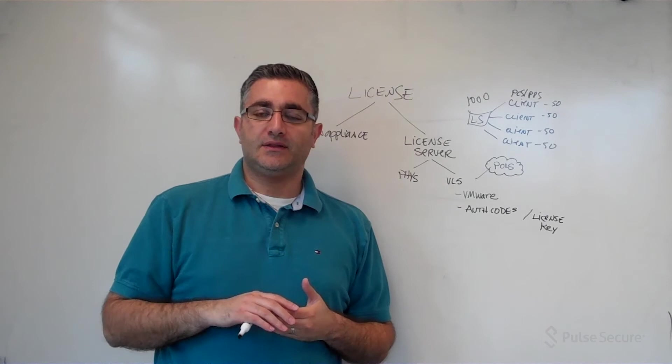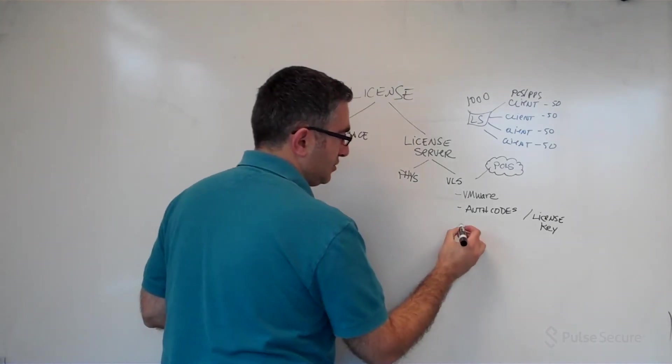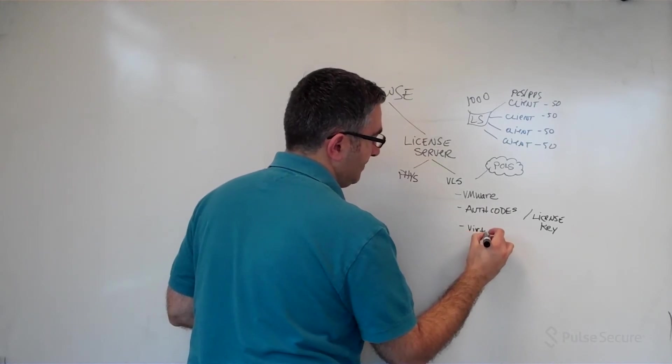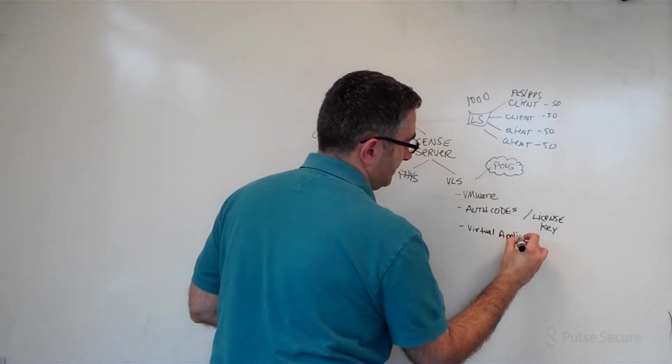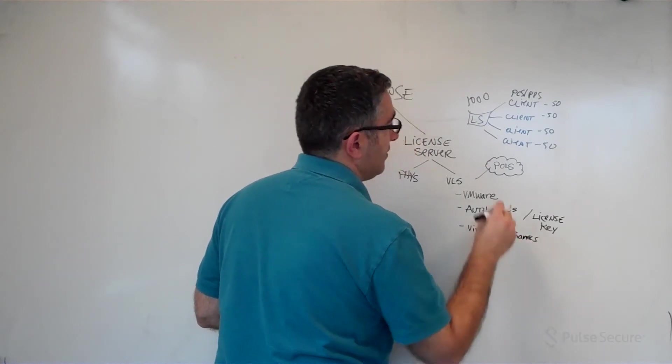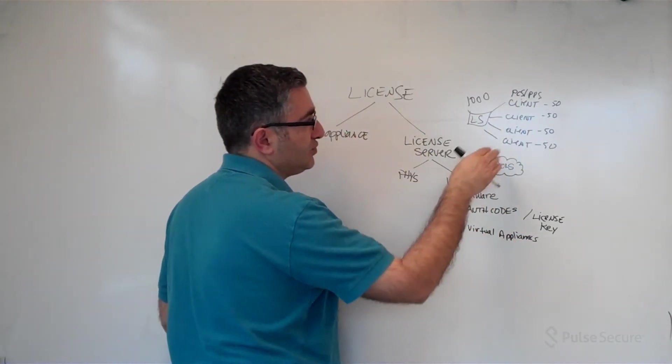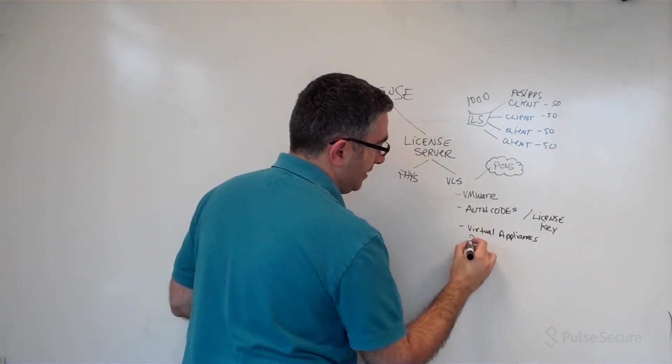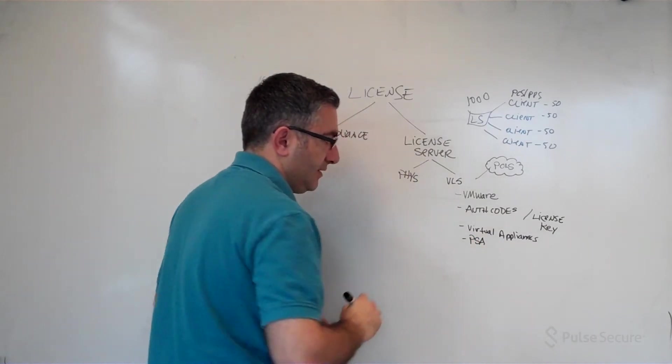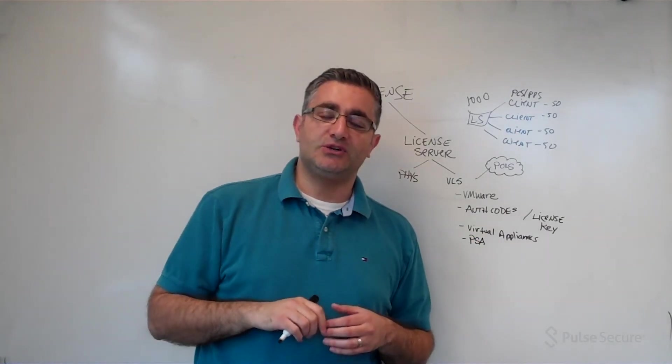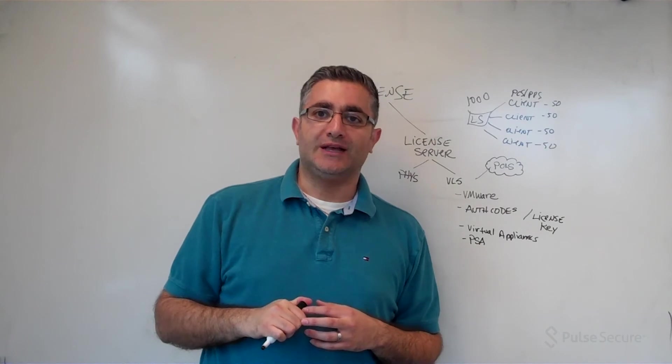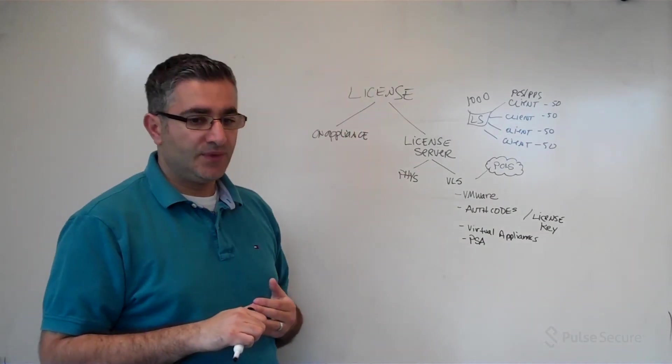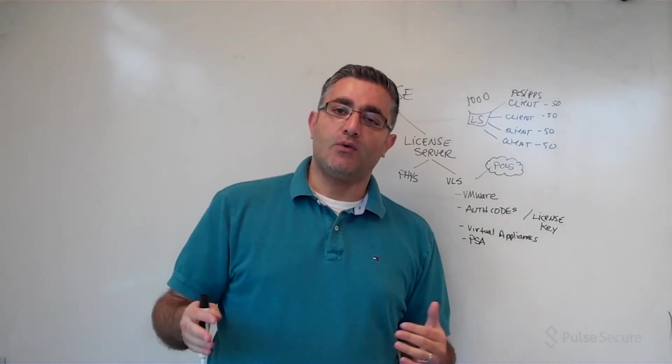Another thing that you should note is that VLS supports leasing to virtual appliances. So these clients can be virtual appliances like virtual PCS or virtual PPS, or it can be on PSA. The MAG, SA, IC series, the older generation hardware is not supported with virtual licensing. If you do have those, then you have to stick with a physical license server.